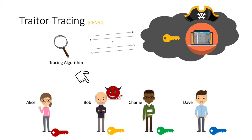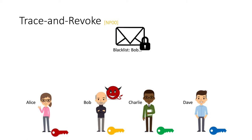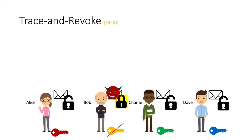Trace and revoke is a concept introduced by Naor and Pinkas as a further extension of traitor tracing. Once the company identifies that Bob betrayed the group and created a decoder box, is there a way to revoke Bob's access to future ciphertexts without a complicated key rotation procedure? In a trace and revoke scheme, the encryption algorithm additionally takes a blacklist of users called a revocation list. Everyone not on the revocation list can decrypt the ciphertext; everyone on the list cannot.